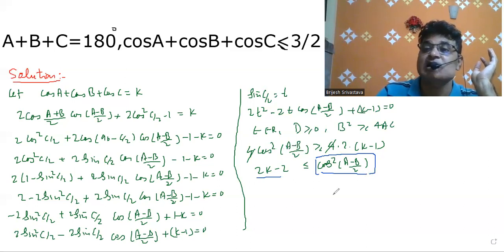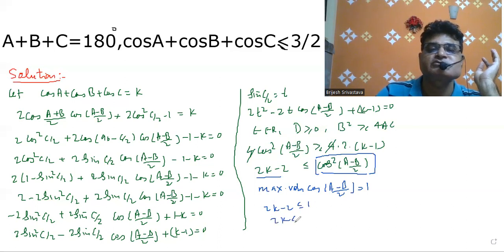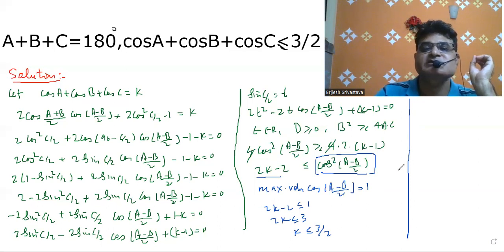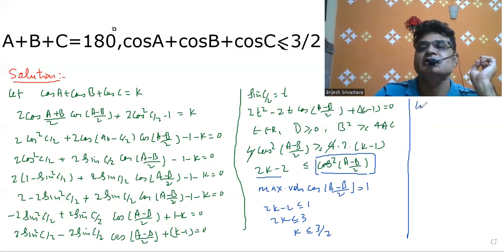Since the highest value of cos((A-B)/2) is less than or equal to 1, applying the discriminant condition gives 2K less than or equal to 3, so K is less than or equal to 3 by 2. Therefore cos A plus cos B plus cos C is less than or equal to 3 by 2.